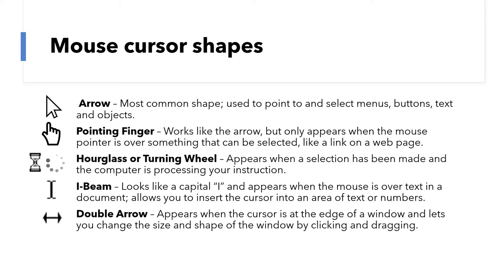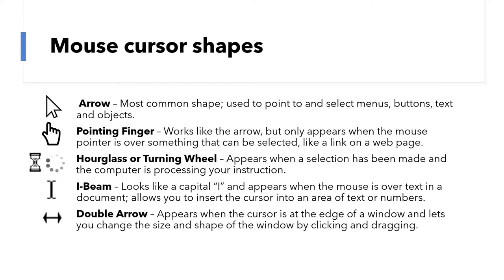Another thing that you might see is the eye beam — it looks like a capital letter I. Generally what that means is that you're in a place on the page where you can type. For example, in Microsoft Word, almost all of the areas in that program show the eye beam because it's intended to let you type a letter or something like that. If you're on the Internet, you might see that in a field where you're supposed to put in your name, email address, or phone number — it's just letting you know that that's an area where you can type.